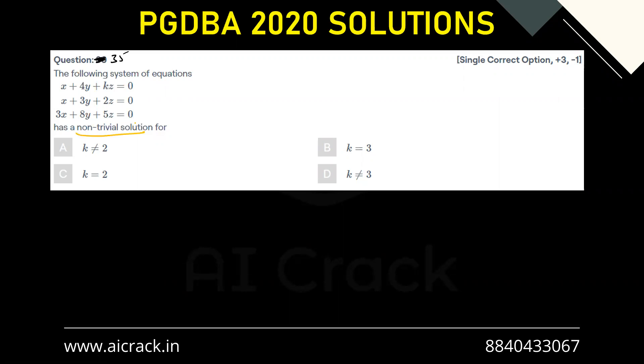So what do we mean by non-trivial solution? Trivial solution means we have x equals 0, y equals 0, and z equals 0. This is the solution called trivial solution. Any other solution which is not this solution is called a non-trivial solution.